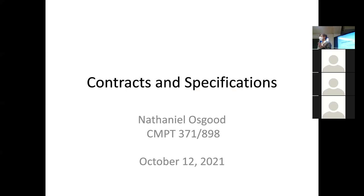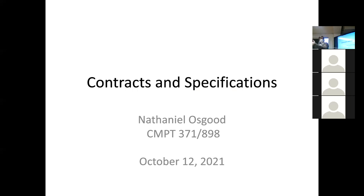What else could a specification help with beyond testing and division of labor? Peer review — you understand what's expected in the code and can see if the code, as written, matches up against the specification. Another thing it can help with is mocking, because it gives you the basis to mock. It can also help with writing assertions, because the specification is kind of a freebie for assertions.